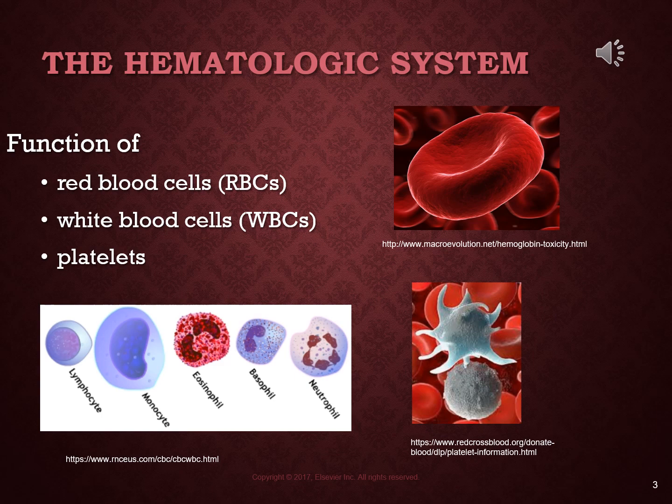Our blood contains three different kinds of cells. Red blood cells are biconcave discs, meaning they have little indentations on either side. They contain hemoglobin, which is responsible for oxygen transportation in our body. They have no nucleus and are produced by the bone marrow, but their production is stimulated by erythropoietin, which is made in the kidneys.